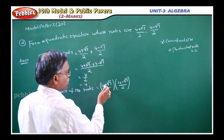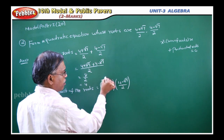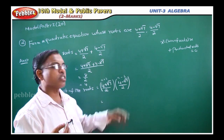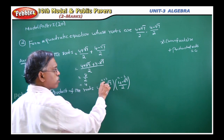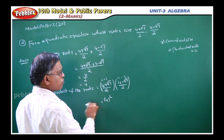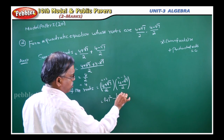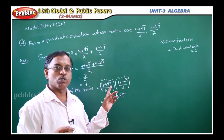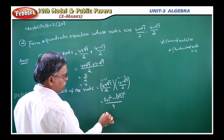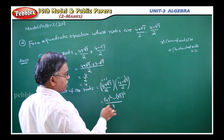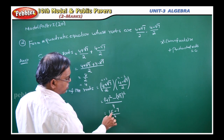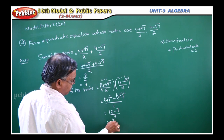The numerator is of the form (a + b)(a - b), so we apply the formula a² - b². Here a = 4 and b = √7, and the denominator is 2² = 4. So we get (4² - (√7)²) / 4 = (16 - 7) / 4 = 9/4. That is the product of the roots.